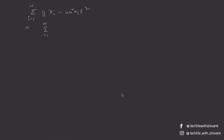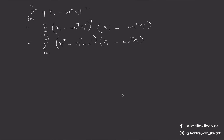The sum becomes: Σ(i=1 to n) of (xi - u*u^T*xi)^T * (xi - u*u^T*xi). Using (a+b)^T = a^T + b^T, this expands to: xi^T*xi minus xi^T*u*u^T*xi minus xi^T*u*u^T*xi plus u*u^T*u*u^T*xi terms, giving us the full expansion we need to minimize.